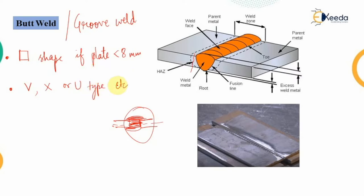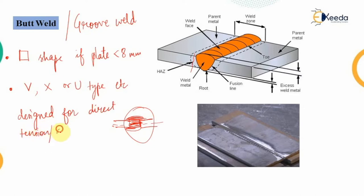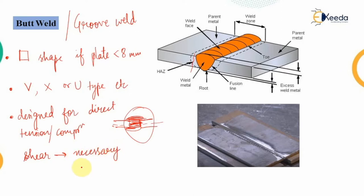Butt welds or groove welds are primarily designed for direct load — that means direct tension or compression. Although if shear is present it is not neglected, and necessary provisions are made for the safe transmission of shear force.